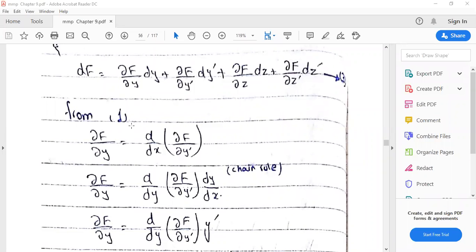Now partial f over partial y from equation 1 minus d by dx partial f over partial y prime.